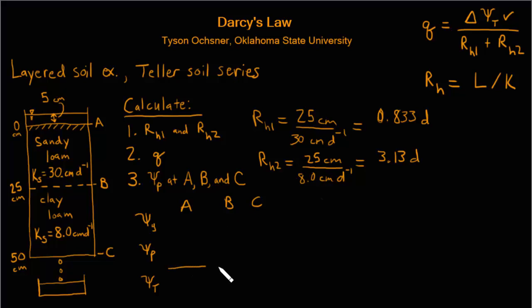Before we can calculate the gravitational potentials, of course we have to set a reference elevation, and it's convenient in this case if we set the reference elevation to be the bottom of the soil column. When we do that, then the gravitational potential at C is 0 by definition. At B has a potential of 25 centimeters and A then has a gravitational potential of 50 centimeters.